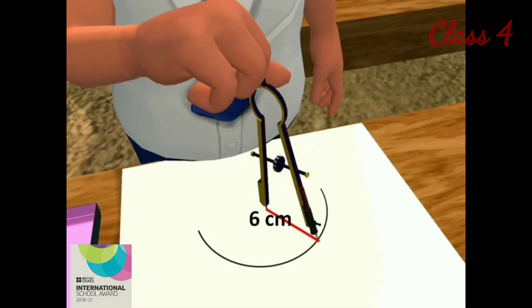Now open the compass according to the measurement of the radius. As we want to draw a circle of 6 cm radius, the distance between the needle tip and the pencil tip should be 6 cm.